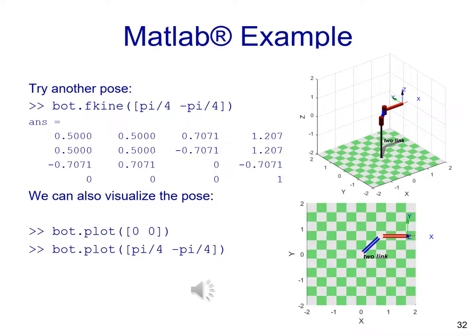We might try a couple more examples. Imagine that we have Q1 equals pi over 4 and Q2 equals minus pi over 4.